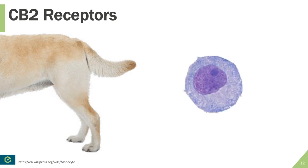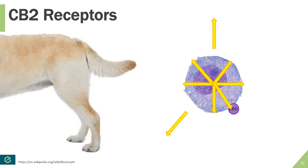Now let's review the effect cannabinoids have once they have activated the CB2 receptors. Here, a CBD molecule will bind to the monocyte's CB2 receptor, and what that does is reduce the ability of that monocyte to release cytokines. There will likely still be some degree of cytokine release, but it is definitely reduced from what it was prior to activation of the CB2 receptor.